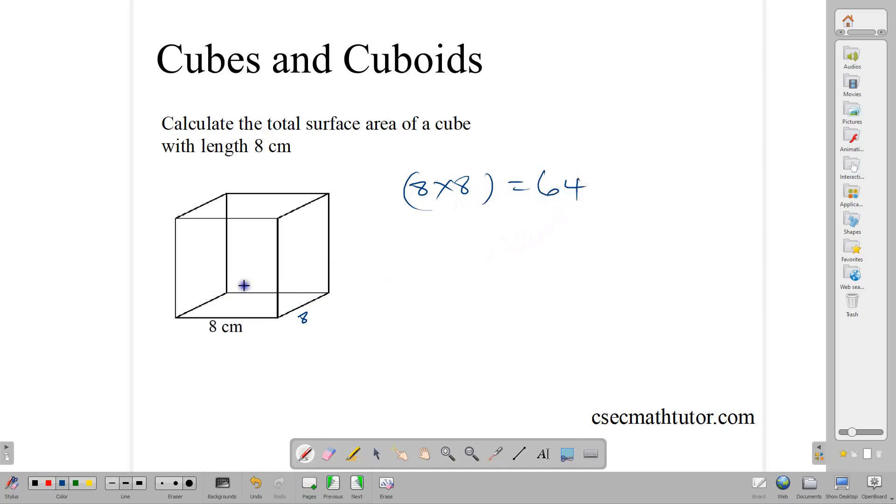And there are six sides. So we simply multiply our 64 times 6, and that gives us 384 centimeters square. And that simply is how we find the surface area of a cube. Pretty simple stuff, but very important nonetheless.